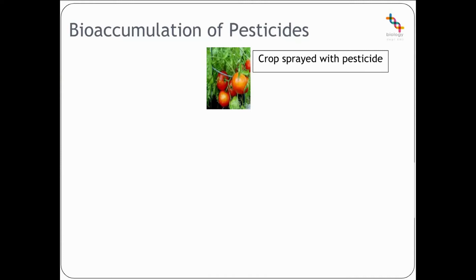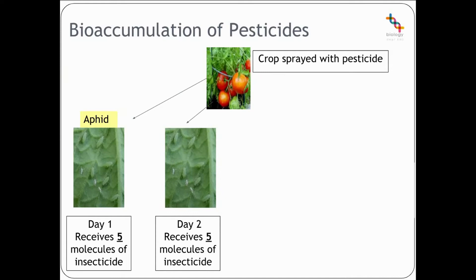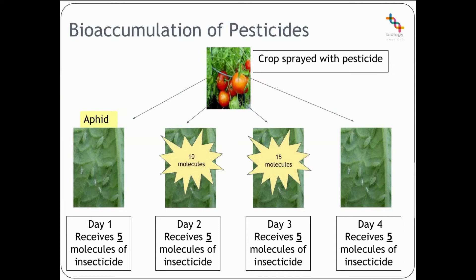This is not to be confused with bioaccumulation, where a pesticide accumulates in the body of one specific organism. If our tomato plant has been sprayed with a pesticide, the aphid comes along and on day one receives five molecules of insecticide, on day two another five so it now has 10, on day three another five giving 15, and on day four another five giving 20. The same would apply to ladybirds eating several aphids. We may get to day three or day four before the aphid would actually die off. That is referred to as bioaccumulation — the fact that the pesticide is going to increase in the body of our organism.